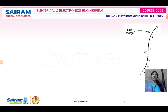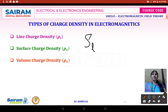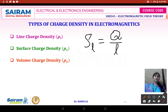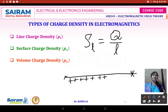Now we will have an explanation of line charge density, volume charge density, and surface charge density. Suppose rho L is the line charge density — if charge is distributed all along the length of the line, then it is called line charge density. For example, consider a line of charges with a starting point and a finishing point.